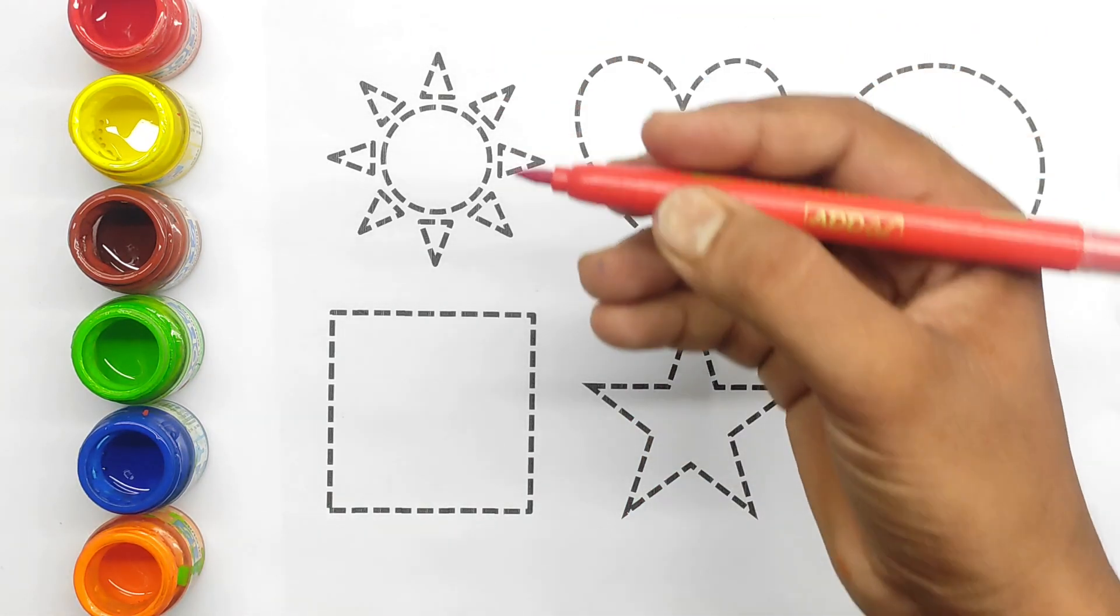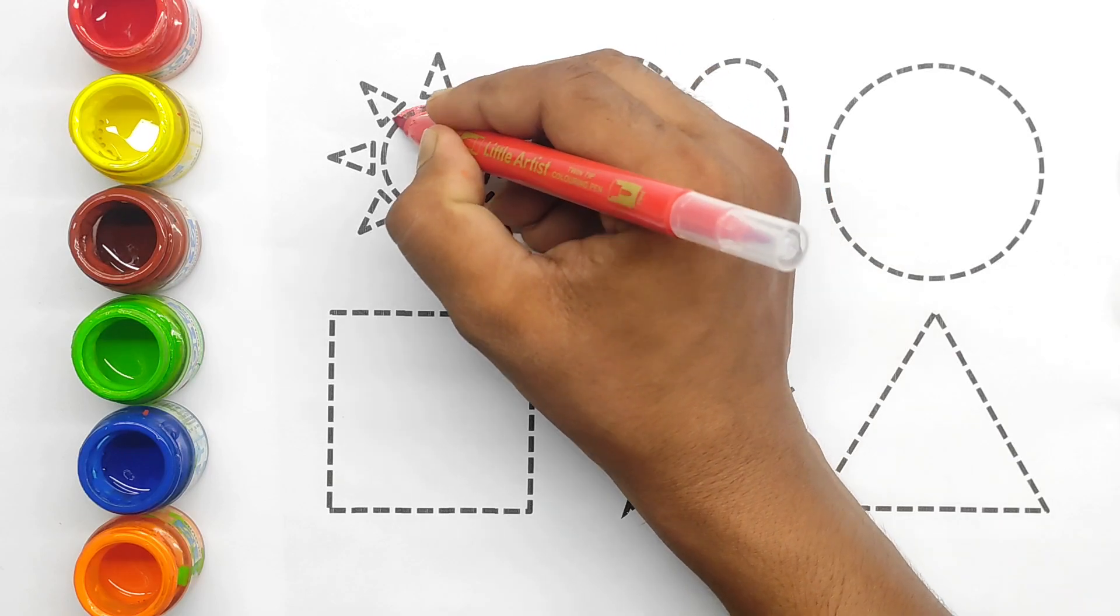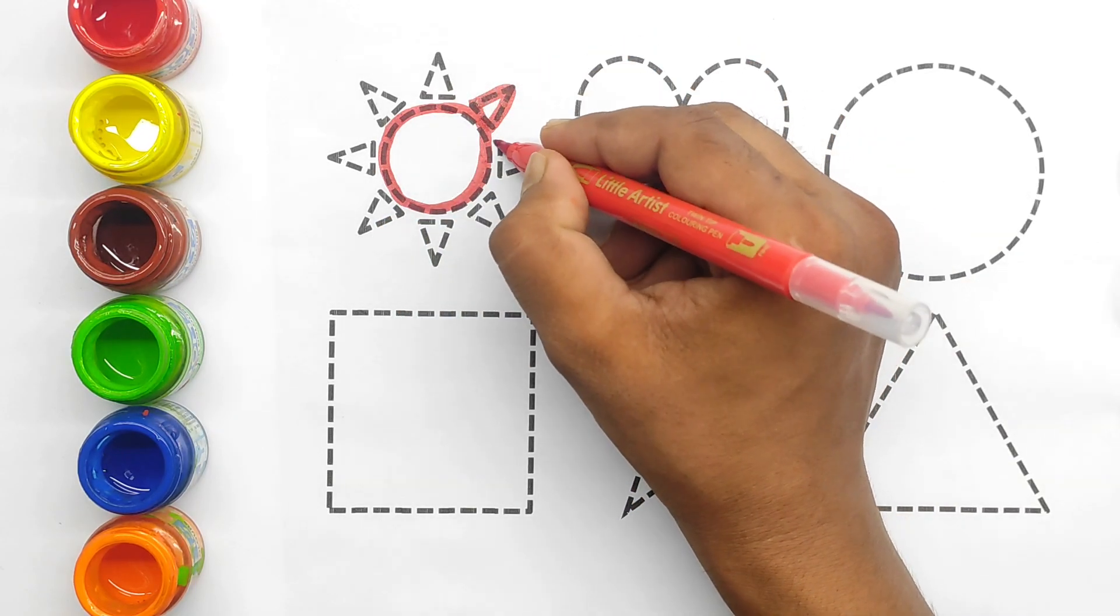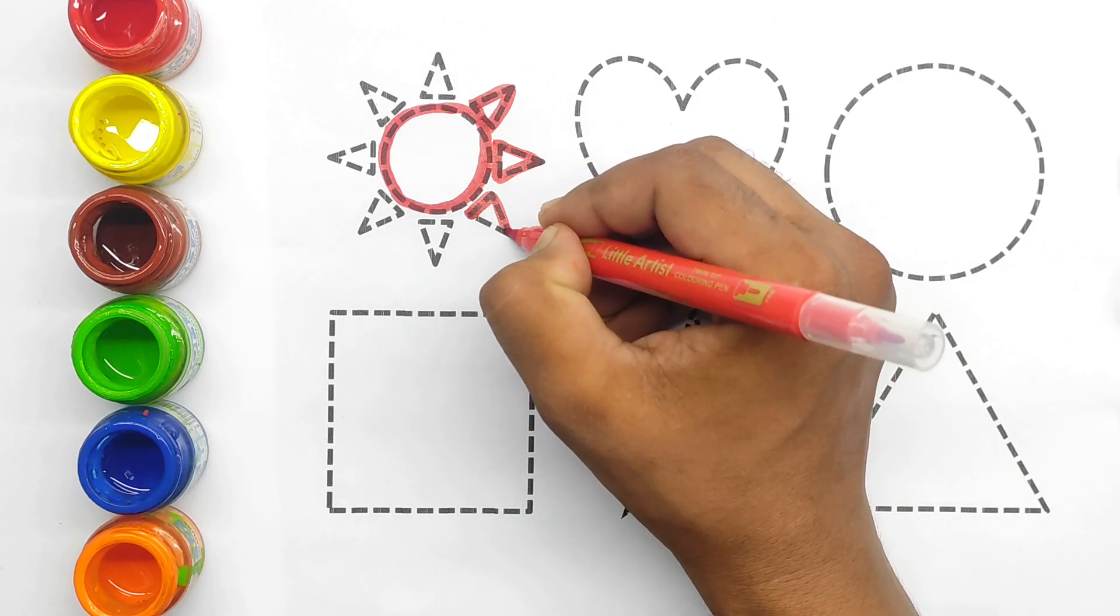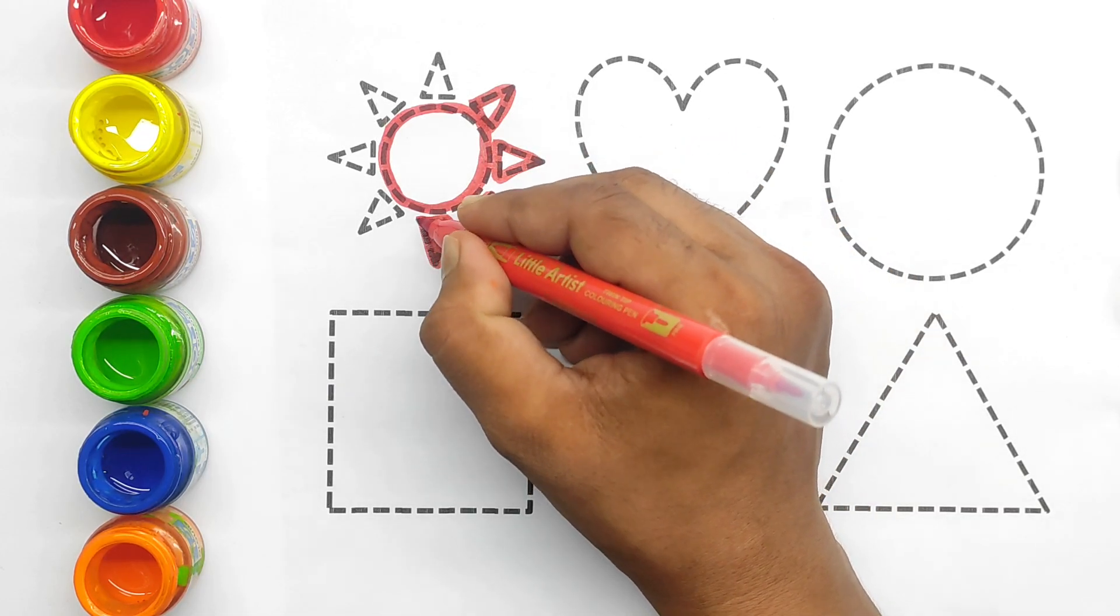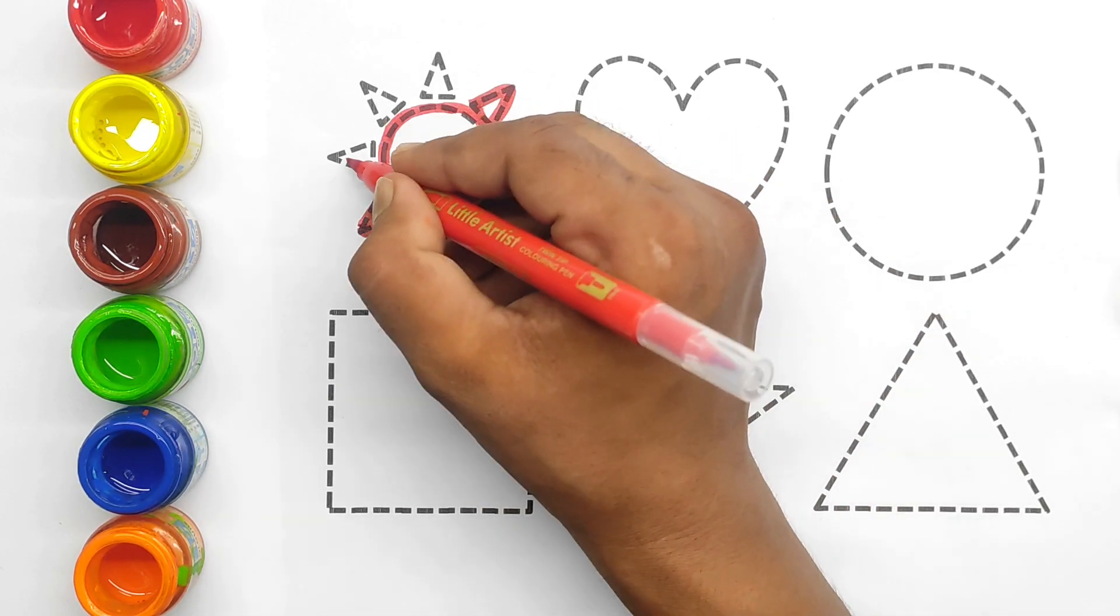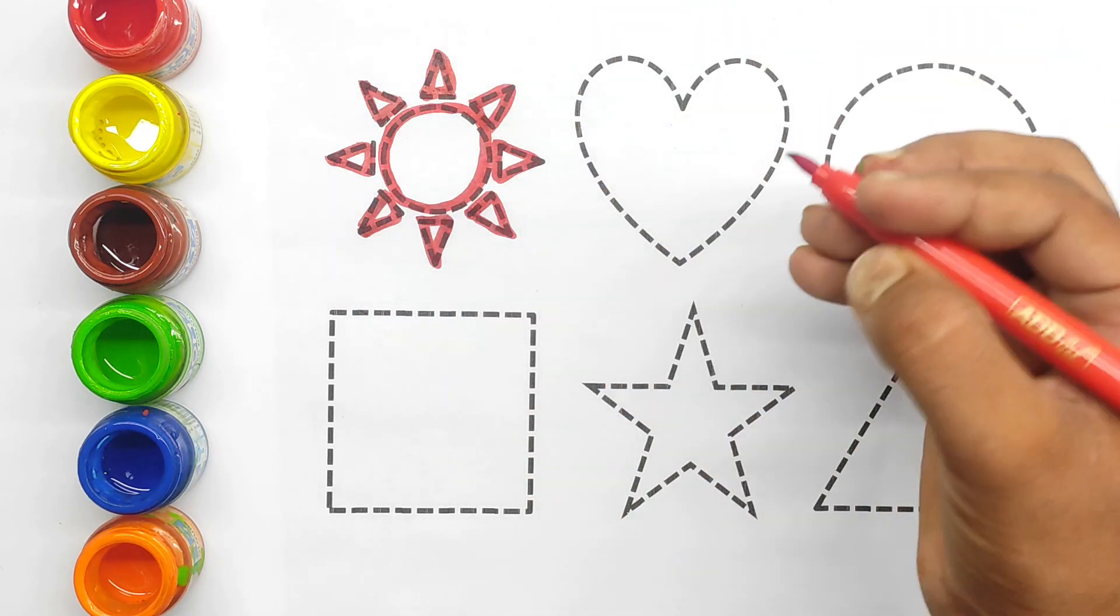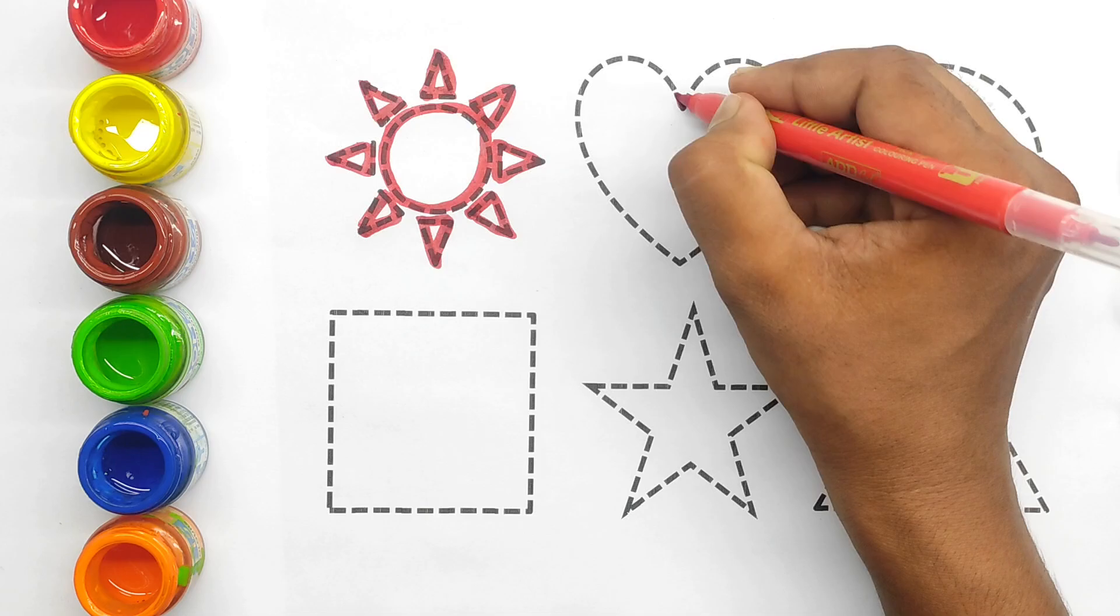This is red color. Sun. This is sun. 2D shape. Sun. Sun. Telling me. 2D shape. Sun.